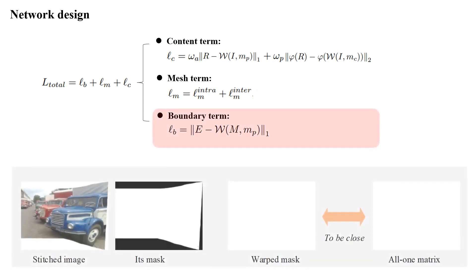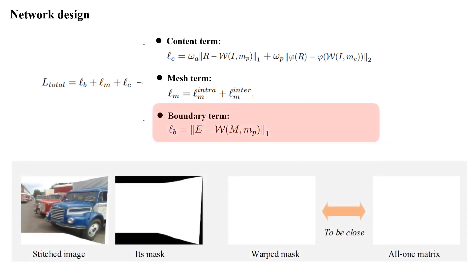For the boundary term, we leverage the mask to supervise the boundaries implicitly. Specifically, we warp the mask and constrain the warped mask to be close to an all-one matrix.